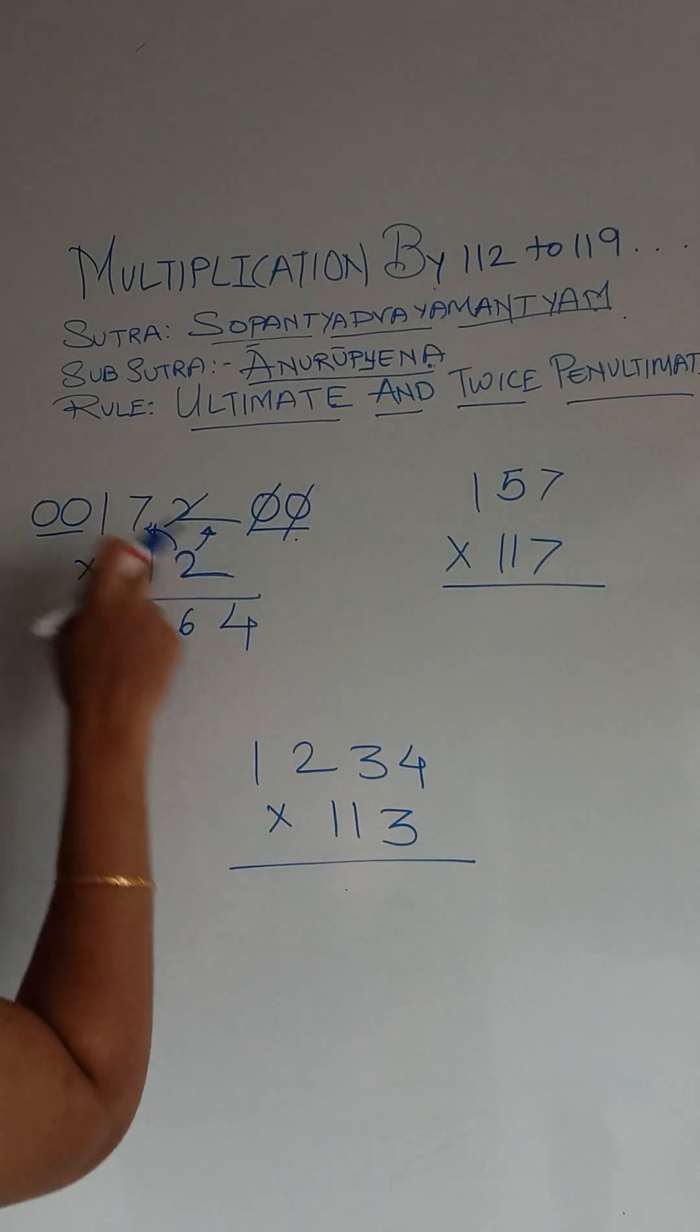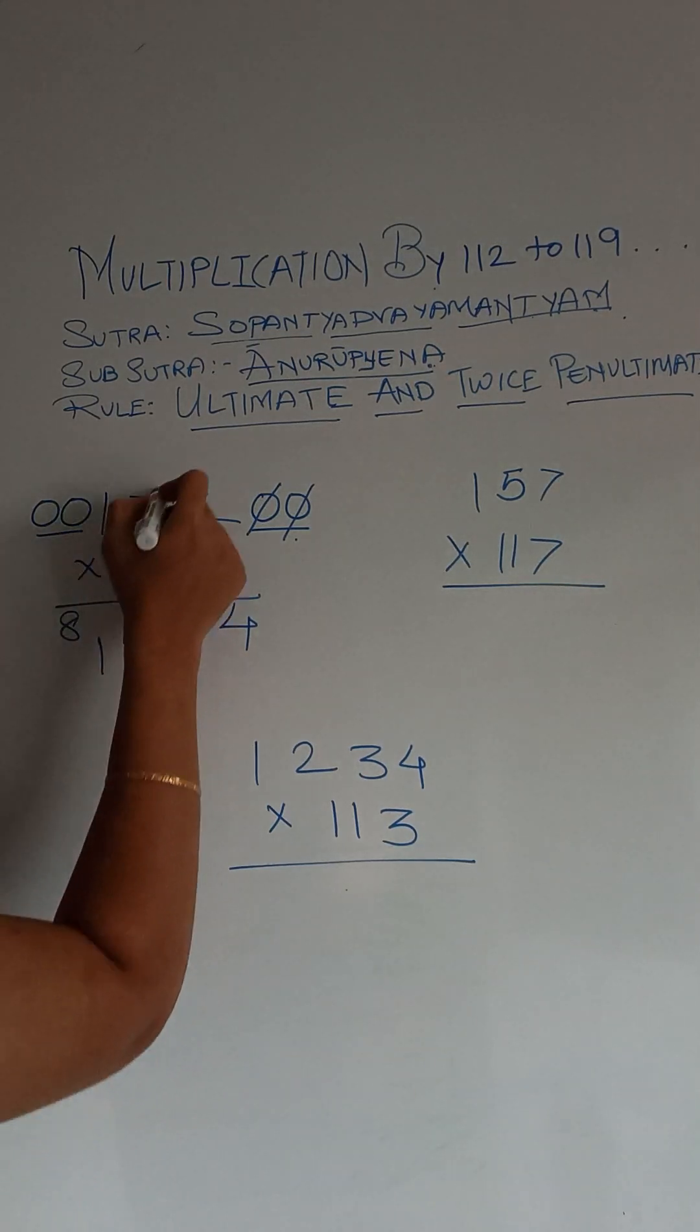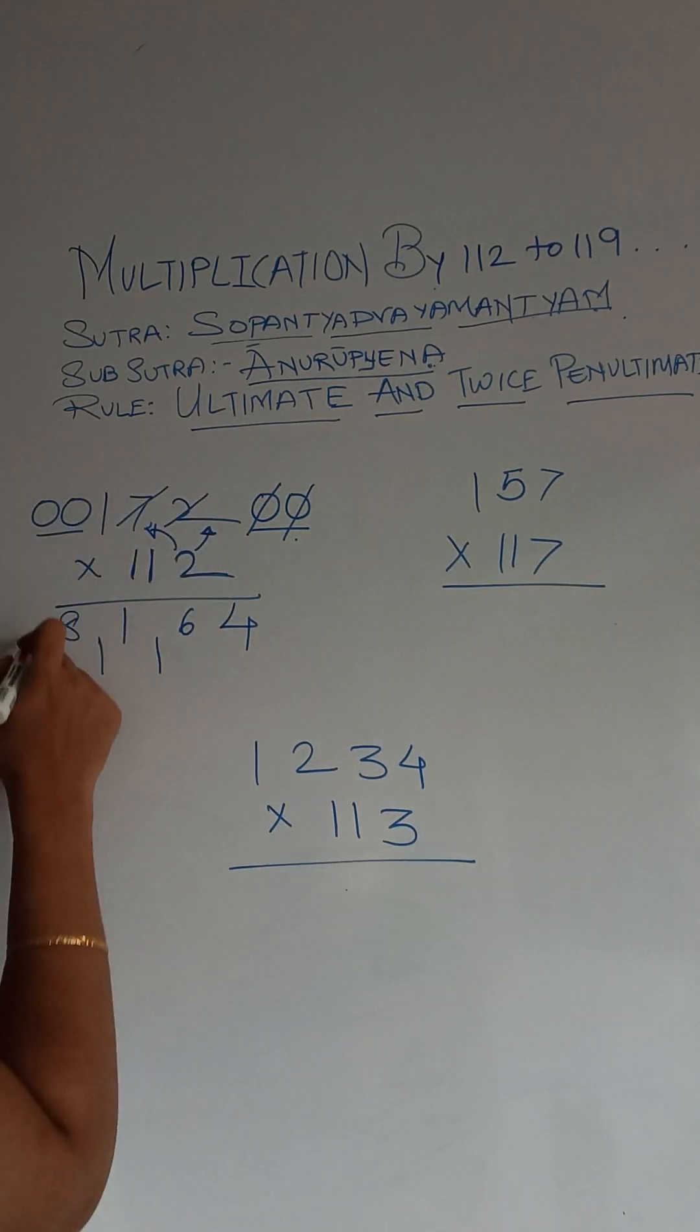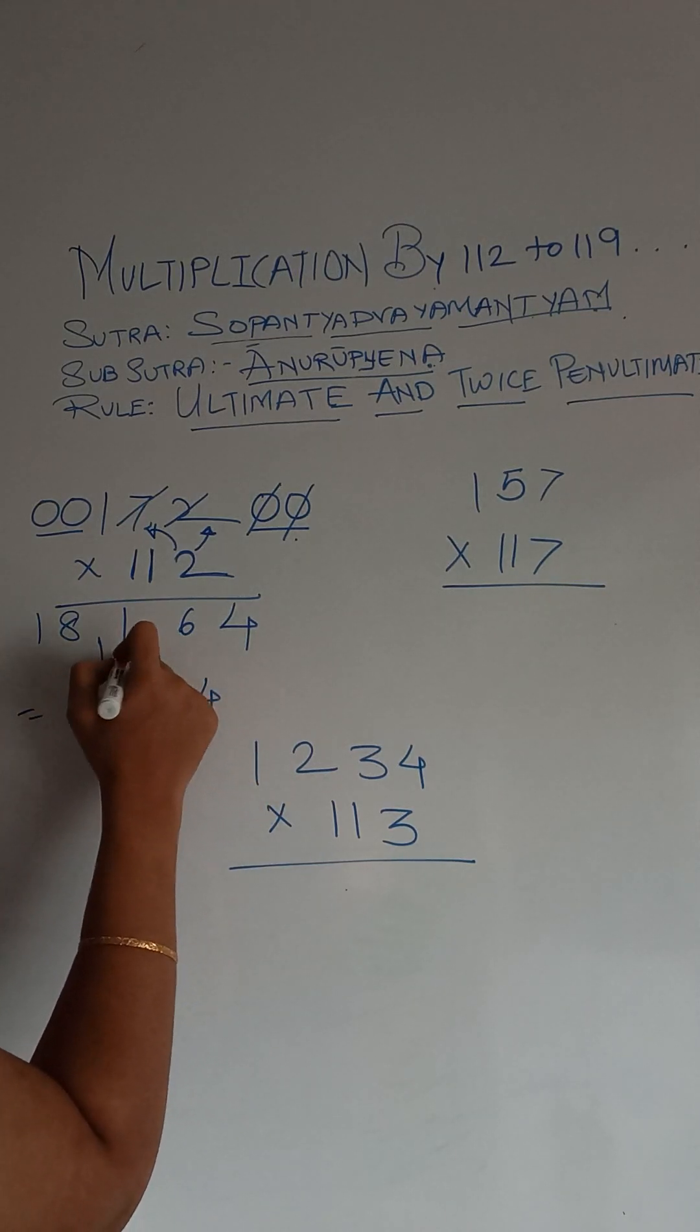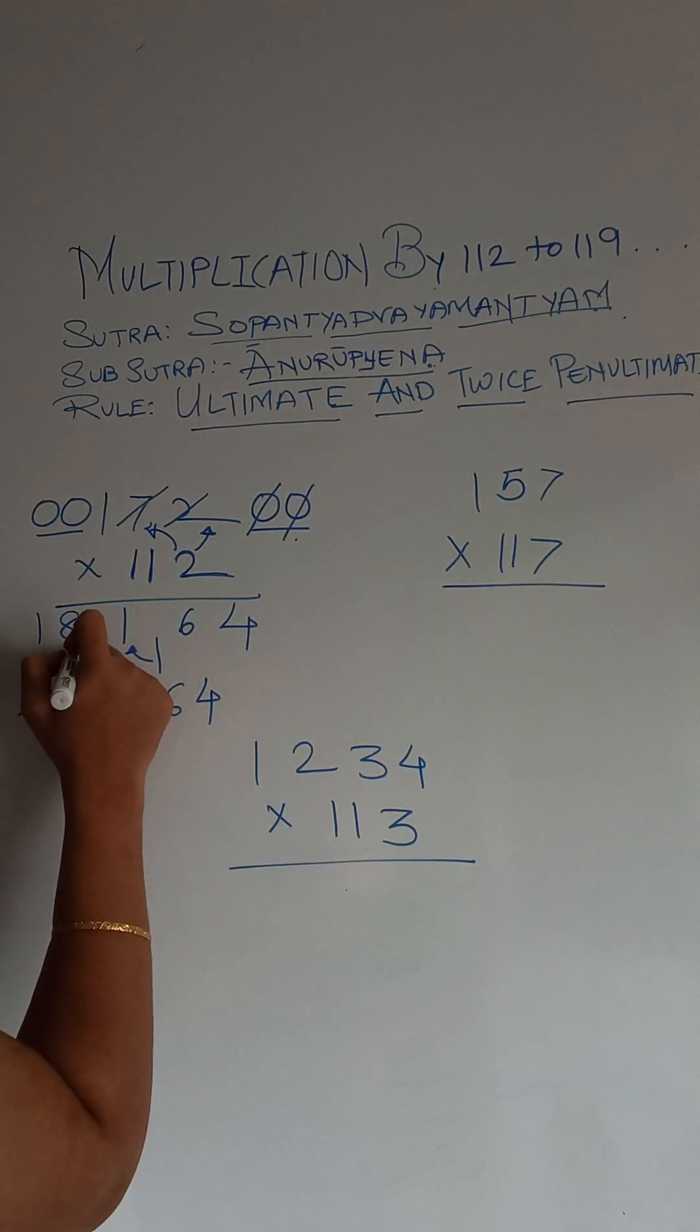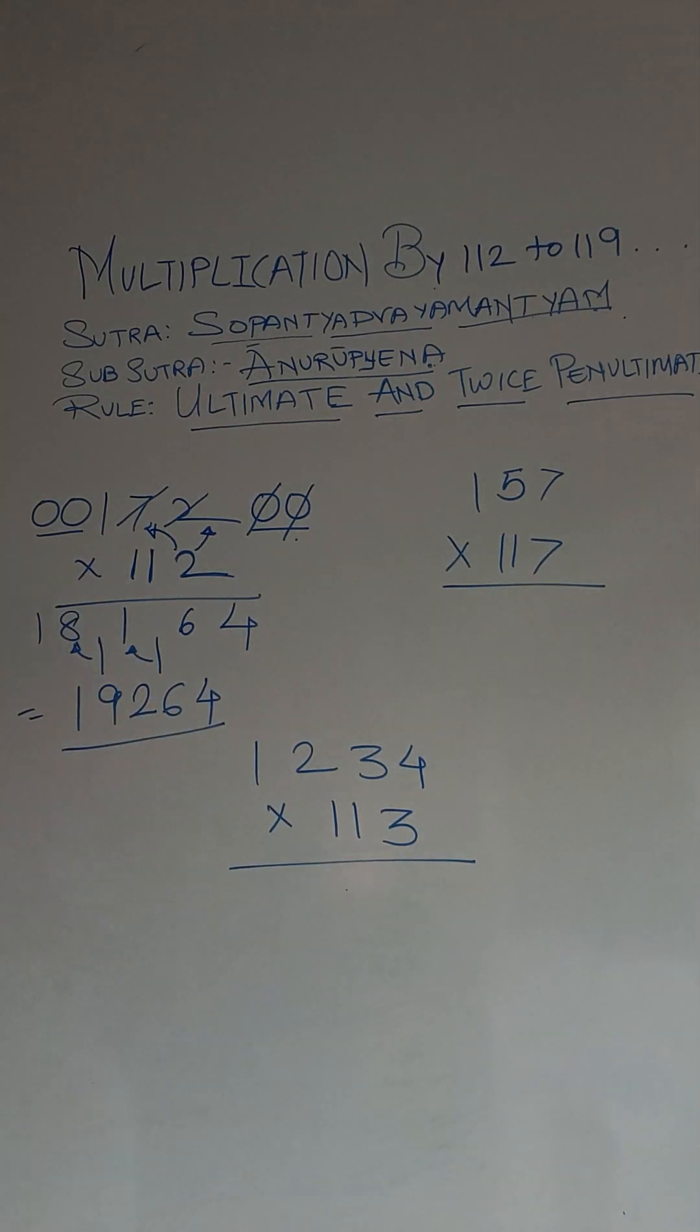So we cancel this. 2 into 0 was 0. 1 plus 7 is 8 now. And then we have got finally 1. So your answer is 4, 6. Here we are going to add 1 plus 1 is 2. 8 plus 1 is 9. And 1. Alright.